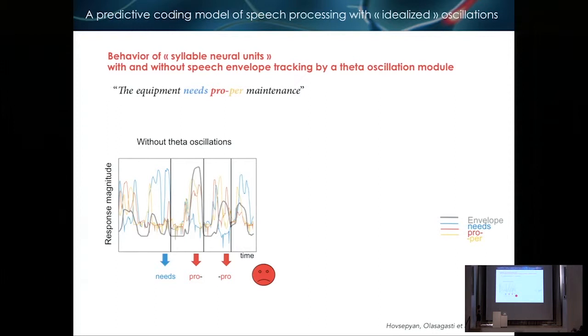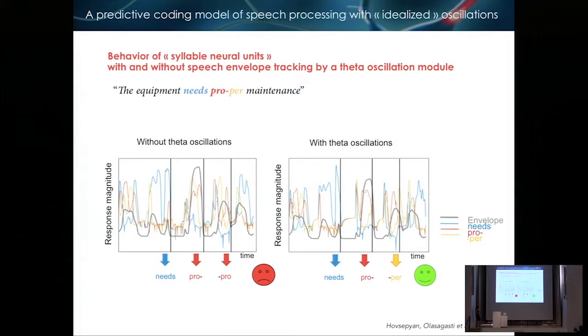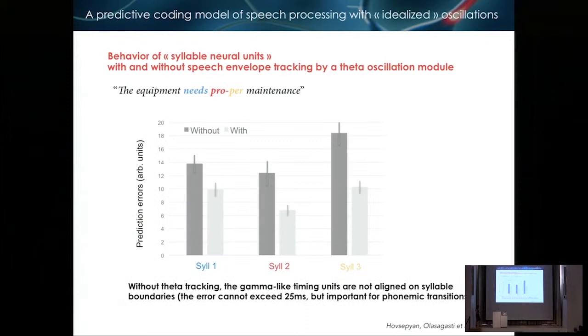So each unit is described by its activity level, which continuously varies during the inference process. So here we have syllable two that presents itself. So here the model is sort of at rest. And then there is a hesitation between syllable two and syllable four, and by iteration and predictions and prediction errors. Then syllable two wins at the end. So just to show you, do you have a sense of the performance of the model, of the behavior of the model? This is a sentence we try to decode. The equipment needs proper maintenance. And I'm going to show you for these three syllables what's going on.